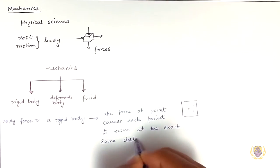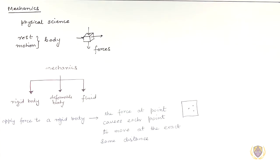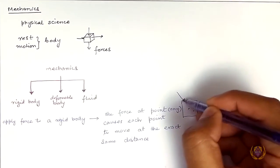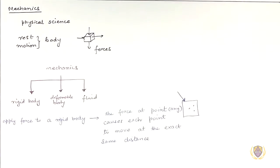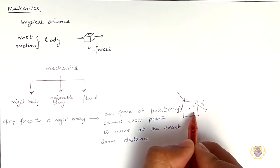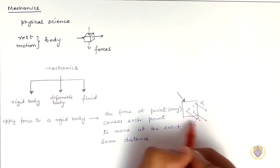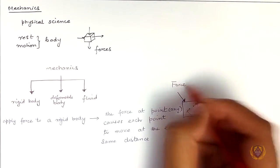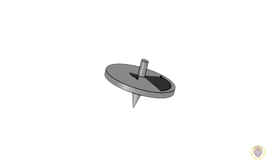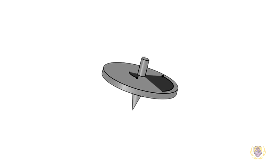As you can see here with the three points shown, the forces being applied on these three points are going to travel the same distances in the same direction. Even if the body is rotating, the relative distance and direction would remain the same.